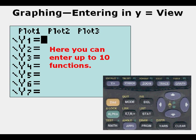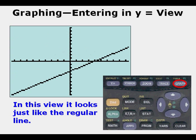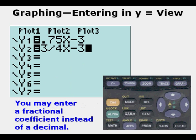We can enter up to 10 functions in this view. Let's enter y = 0.75x minus 3. Once entered, we graph it and it looks like a regular line with positive slope going up from left to right.